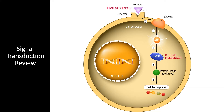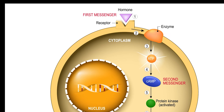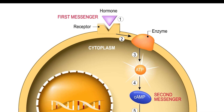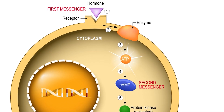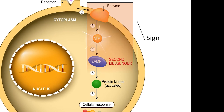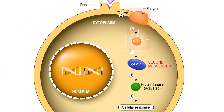Before diving into complex signal transduction pathways, let's do a quick review of terminology. All signal transduction pathways start with the reception of a signal — this can be a ligand or a physical signal from the environment, such as a light ray, a sound wave, or even physical touch. Regardless of the signal, reception creates a conformational change within the receptor protein, which can lead to a wide variety of reactions within the cytoplasm, a process known as signal transduction.